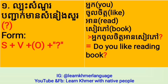The form for the first type is: Subject plus Verb plus Object (if there is one) plus Question Mark. Don't forget the question mark. Let's see the example, and don't forget to stress the sound at the end of the sentence.